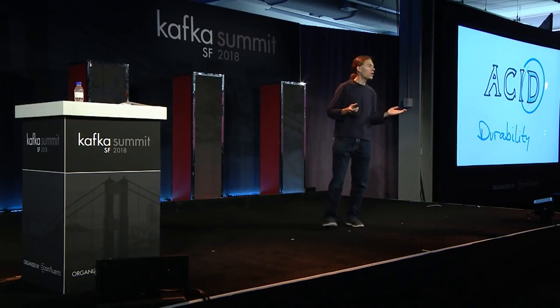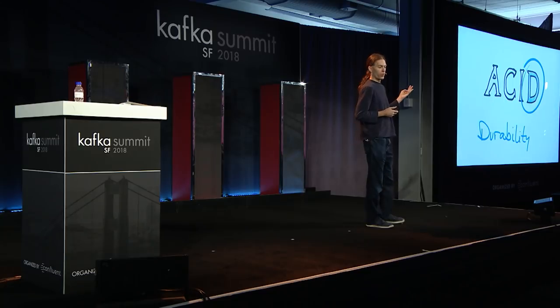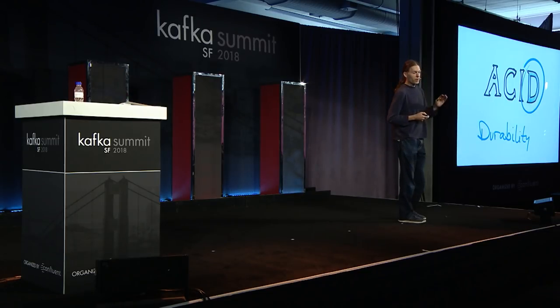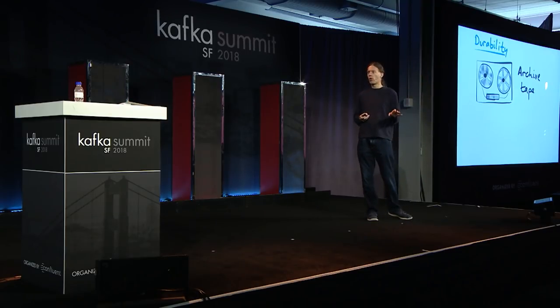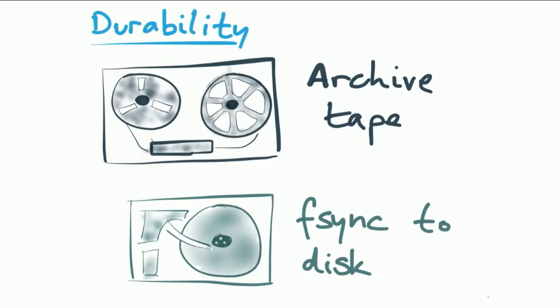Let's start with the letter D — Durability — because that's in many ways the easiest one to deal with. Back when this acronym ACID was coined in the early 1980s, durability meant writing your transaction log to an archive tape, so that even if a problem occurs with the database, you can restore it from that tape. Nowadays, tapes have fallen somewhat out of fashion, so durability got reinterpreted as: we write to disk. We do an fsync to ensure the data has really hit the disk platter, and because this is non-volatile storage, even if you lose power to your server, you can expect the data to still be there.